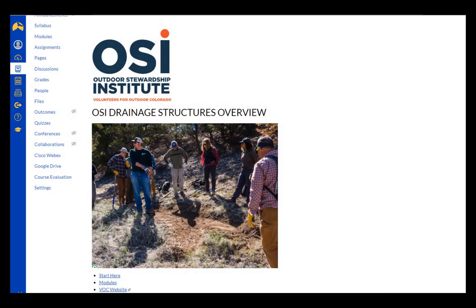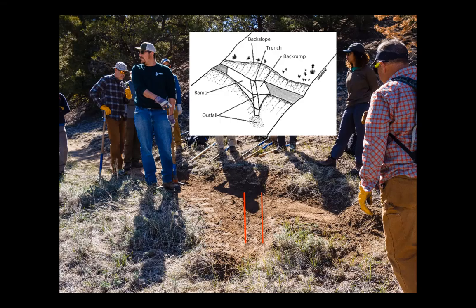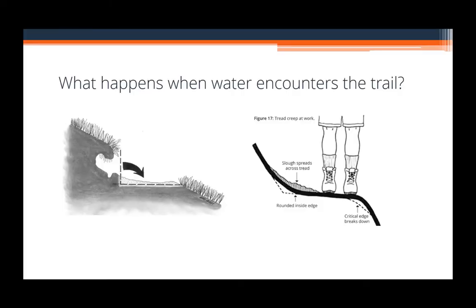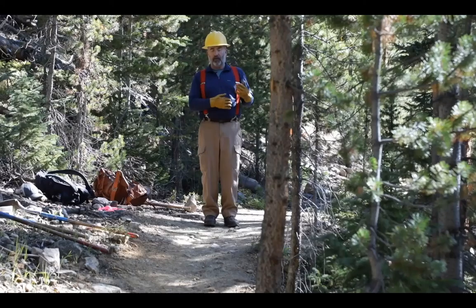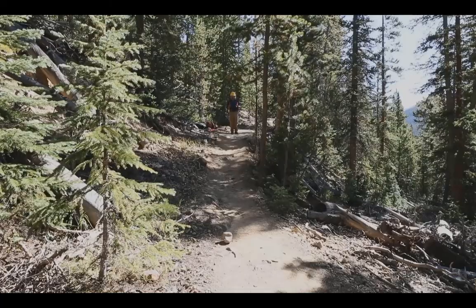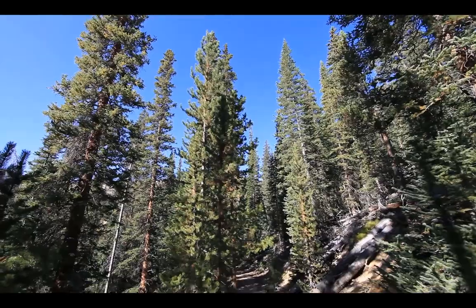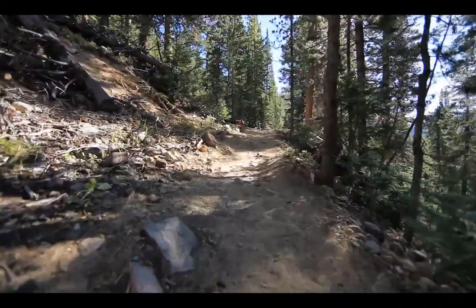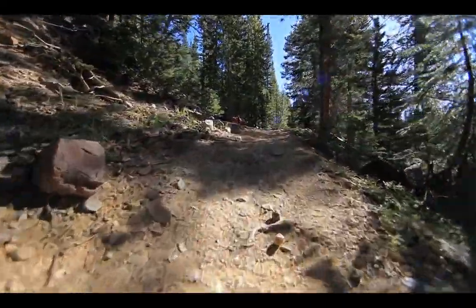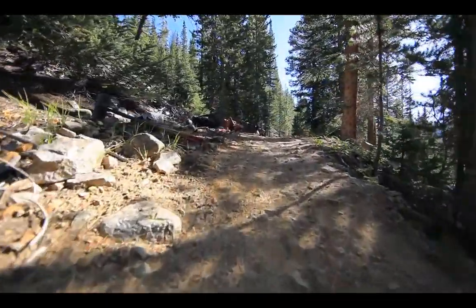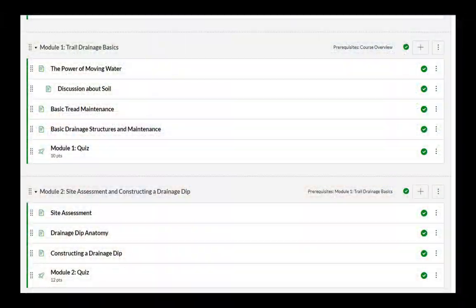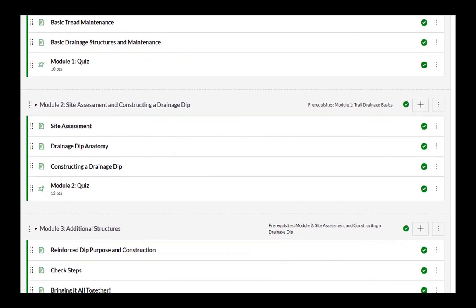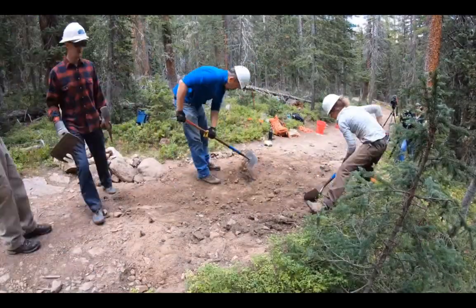The Drainage Structures course provides students with an overview of the purpose and installation of water control and diversion structures in the management of trail erosion. Students learn how water interacts with the trail and the importance of positive drainage. For example, they analyze an area to determine what the water is doing — such as water coming down from above, hitting a berm, and then flowing down the trail. They learn the role of various drainage structures in trail maintenance and how to build and maintain them.